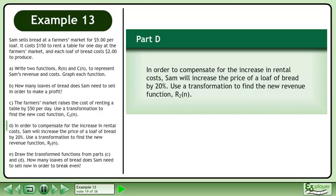Now we'll move on to part D. In order to compensate for the increase in rental costs, Sam will increase the price of a loaf of bread to 20%. Use a transformation to find the new revenue function, R2.